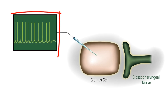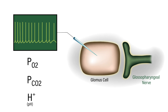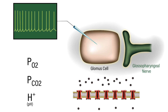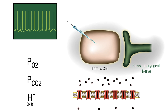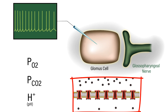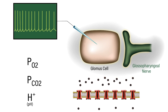Glomus cells are capable of producing action potentials. The excitability of the glomus cells is determined by the systemic arterial blood gas composition, namely the partial pressure of oxygen, the partial pressure of carbon dioxide, and pH. Glomus cells express a variety of ion channels whose activities can be modulated by oxygen, carbon dioxide, and free protons. The change in activity of these ion channels alters the excitability of the glomus cells, resulting in changes in action potential frequency and ultimately changes in neurotransmitter release onto the cranial nerves.